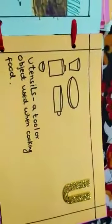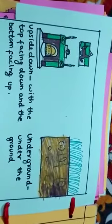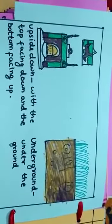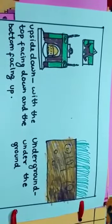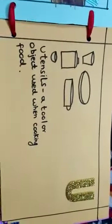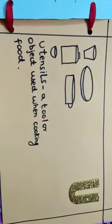Our next alphabet is U. The first word from U is upside down. You can see in the picture that the picture of the horse is kept upside down. Upside down means with the top facing down and the bottom facing up. The second word is underground, that means under the ground. The third is utensils, that is a tool or object used when cooking food.